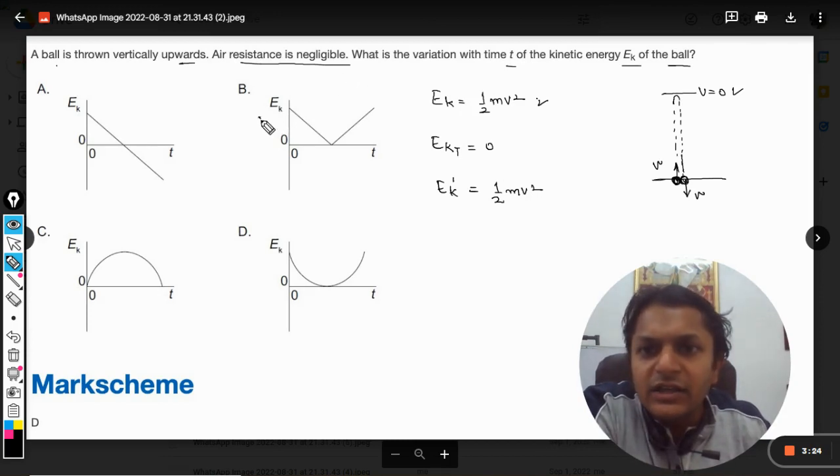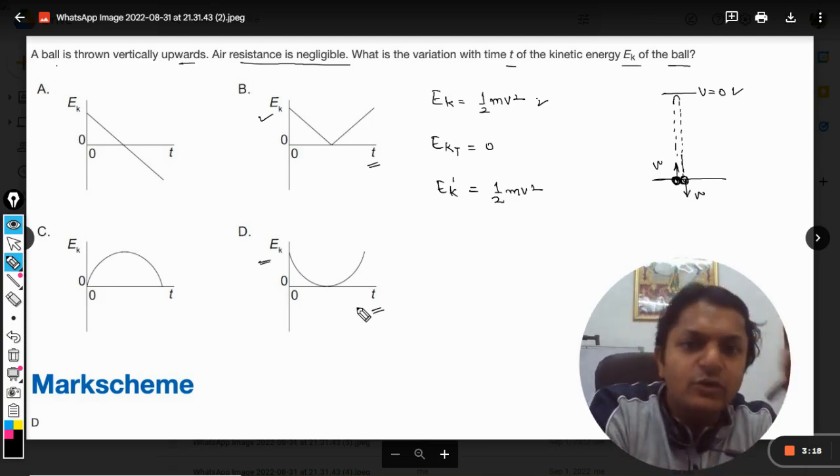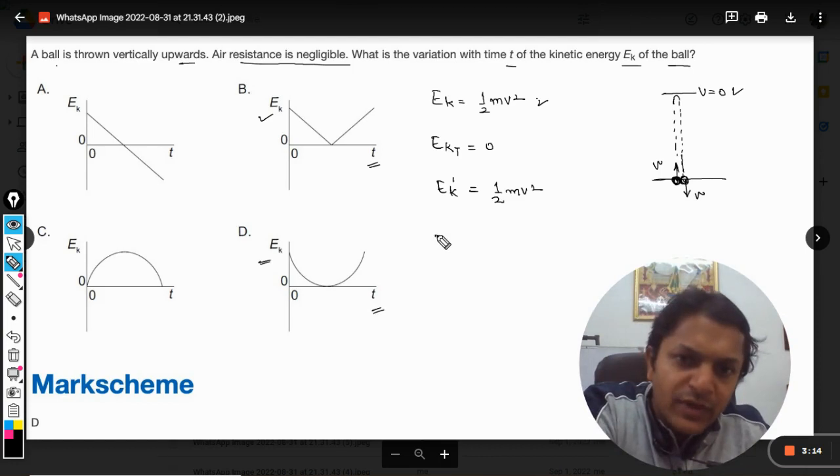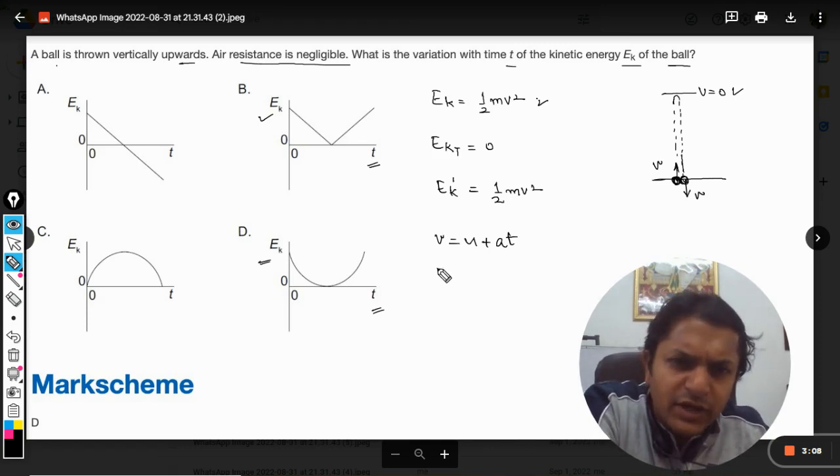So this is the first level. Now the problem is that we want to create the graph of Ek with respect to time t. We need to substitute the value of v in terms of t. So here it will be v is equal to u plus at.